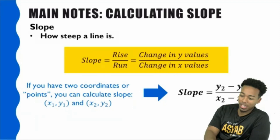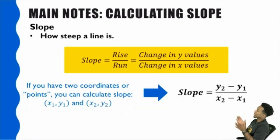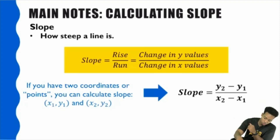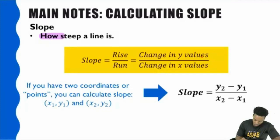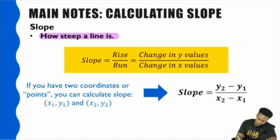Let's start taking notes. Calculating slope — let's think about it in English first. Slope is basically how steep a line is, that's all slope is. There's a formula, but there's also a way right in the middle, not pure math and not pure English — it's rise over run.